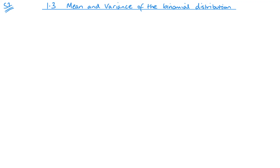Welcome to this video on S2. Today we're going to be looking at mean and variance of a binomial distribution — this is unit 1.3. I'm not going to go through where you get the mean and variance; that is described in your textbooks and there are plenty of sources online. What I'm going to do is state what you need and then how to use it.